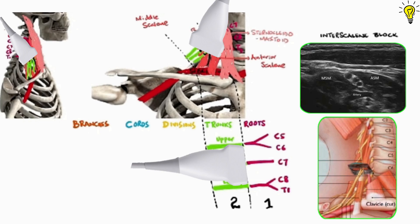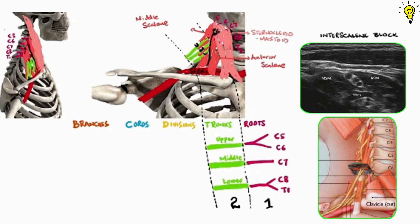Now in the ultrasound image, we can see the fine traffic light signal. Roots C5 and C6 almost about to join to form upper trunk and C7 root forming the middle trunk. The lower C8 and T1 are usually spared in interscalene block, so ulnar nerve area is spared. Notice how the roots or trunks, they are sandwiched between the bellies of anterior scalene and middle scalene muscles.